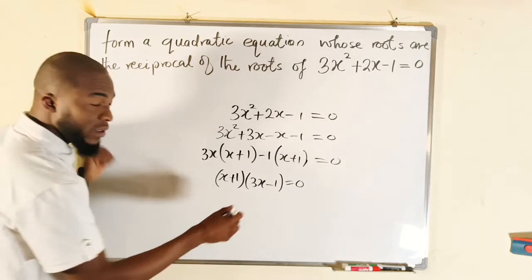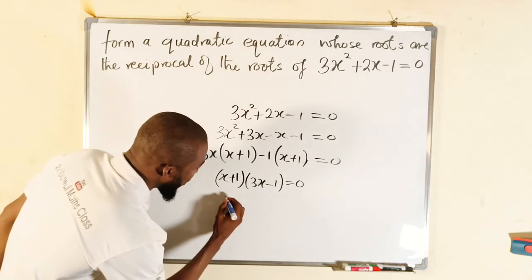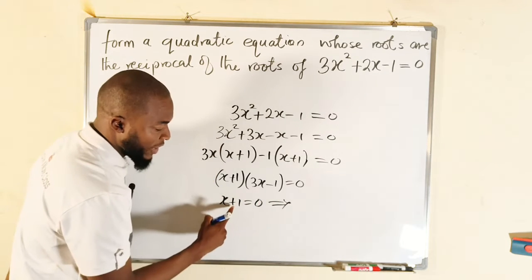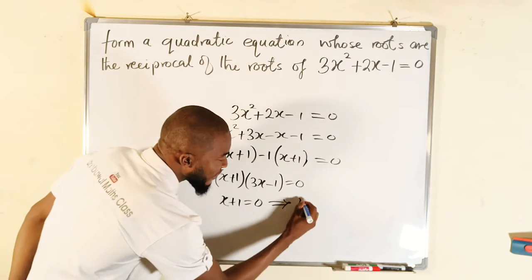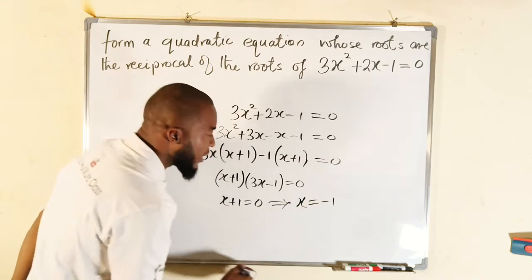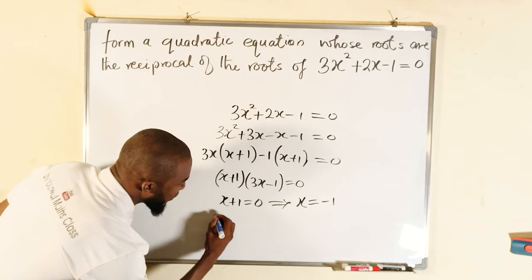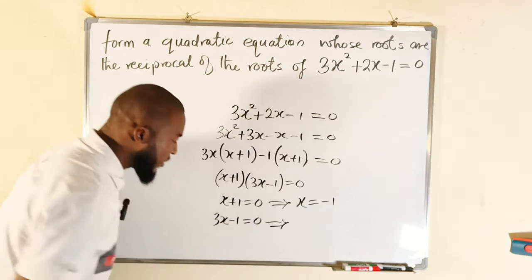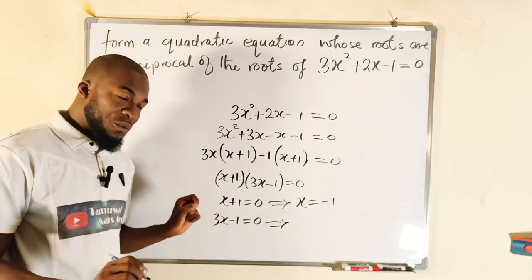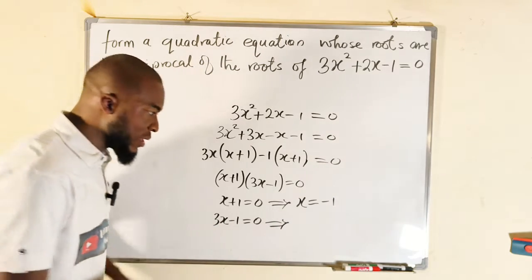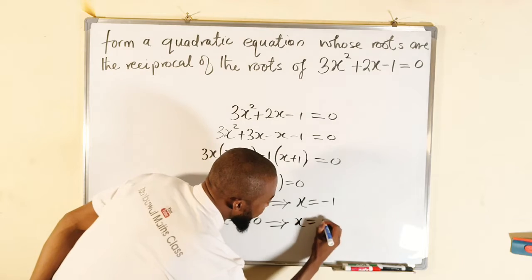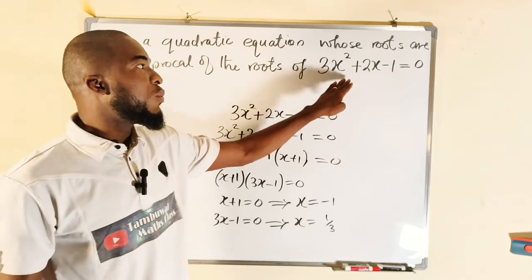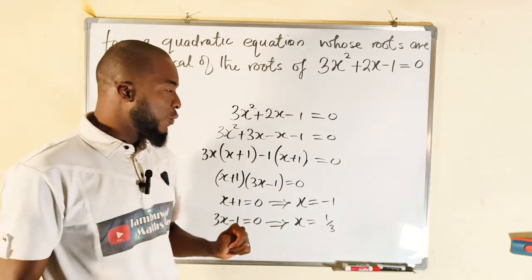We can factorize further. The common factor is (x plus 1). From the first term we have 3x left, and from the second term we have minus 1. This is equal to 0. We set each factor to zero: x plus 1 equals 0 implies x equals negative 1. Then we take 3x minus 1 equal to 0; taking negative 1 to the other side and dividing both sides by 3 gives x equals 1 over 3. So negative 1 and 1 over 3 are the roots of this quadratic equation.